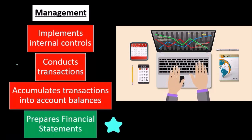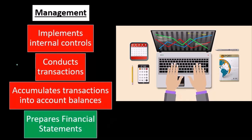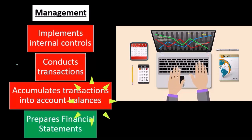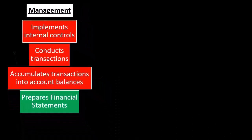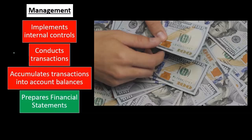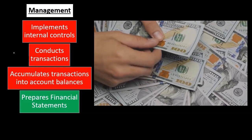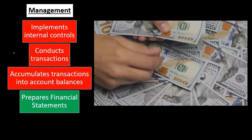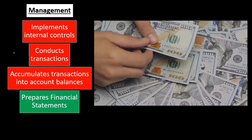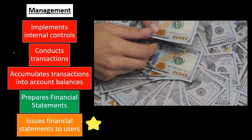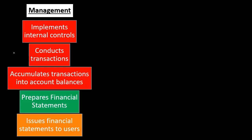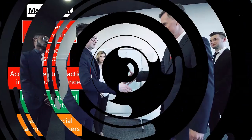Then they're going to take that information and prepare financial statements, which is the end result. If we're talking about a publicly traded company, they're required to have financial statements put together. If they're not publicly traded, they want them for internal use or possibly to get a loan. The end result — representing what has been done in terms of financial accounting according to generally accepted accounting principles — includes the balance sheet, income statement, and statement of cash flows. The financial statements are then issued to users.